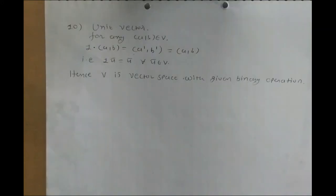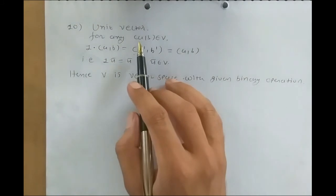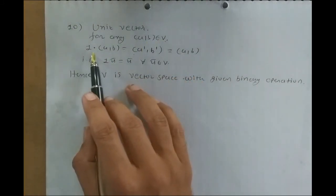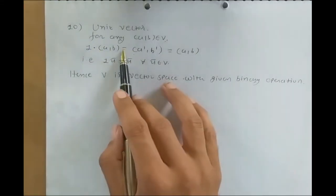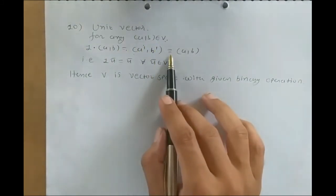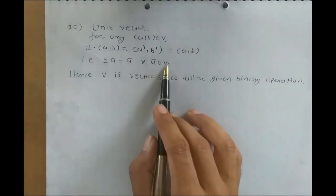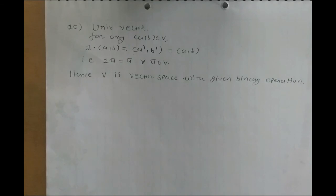Tenth (last) property, the unit scalar property: 1·(A,B) = (A^1, B^1) = (A,B). So 1·U̅ = U̅ for all U̅ in V. All ten properties are satisfied for the given set V with the given binary operations. Hence V is a vector space. If we change the binary operation, the given set V may not be a vector space.